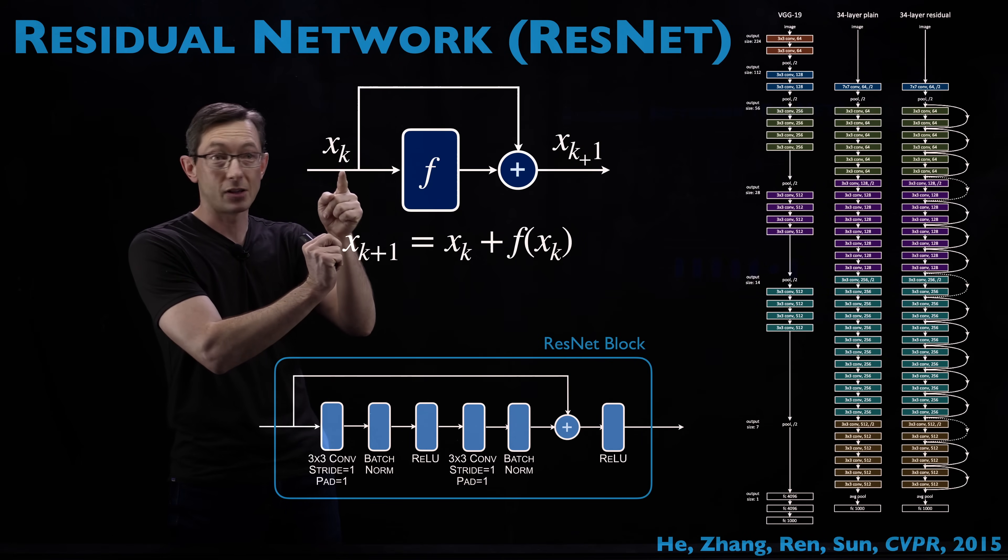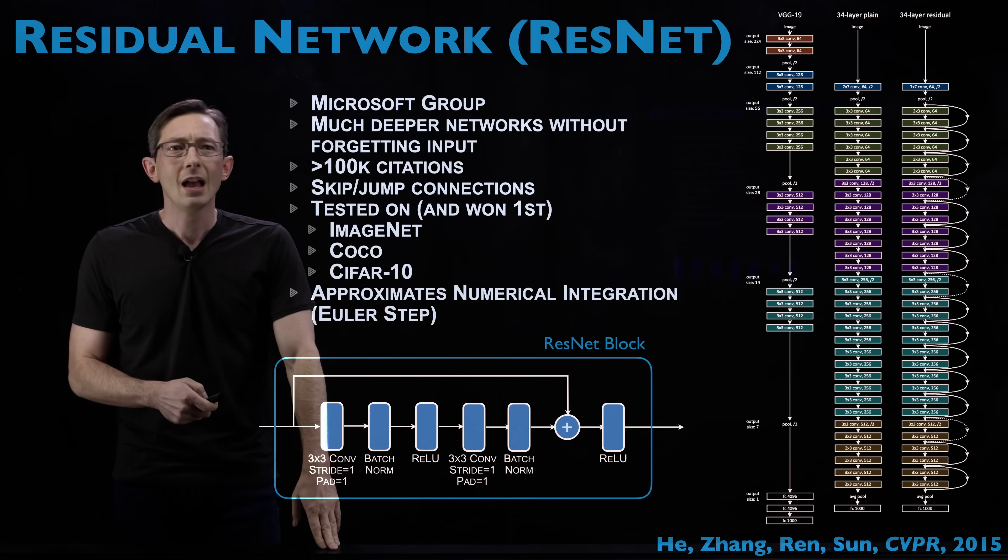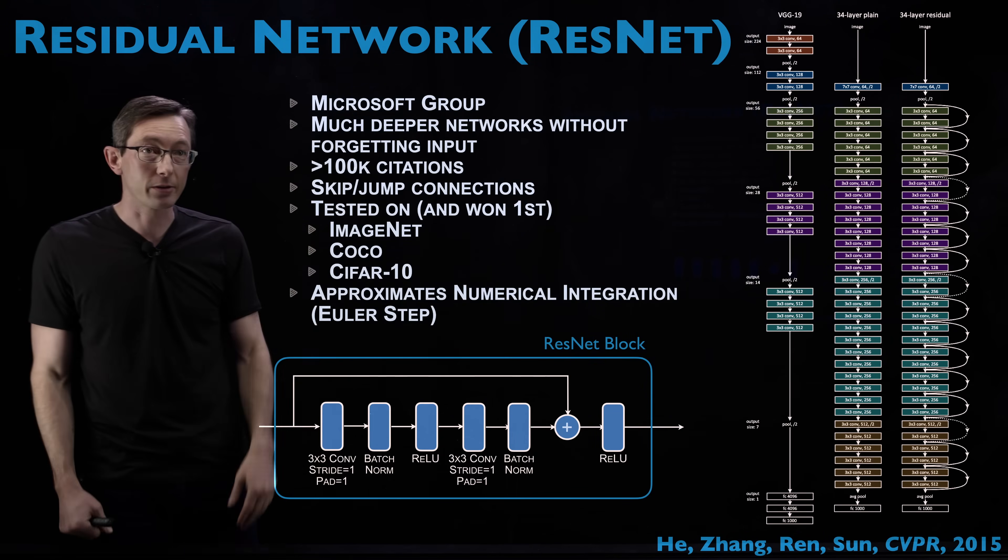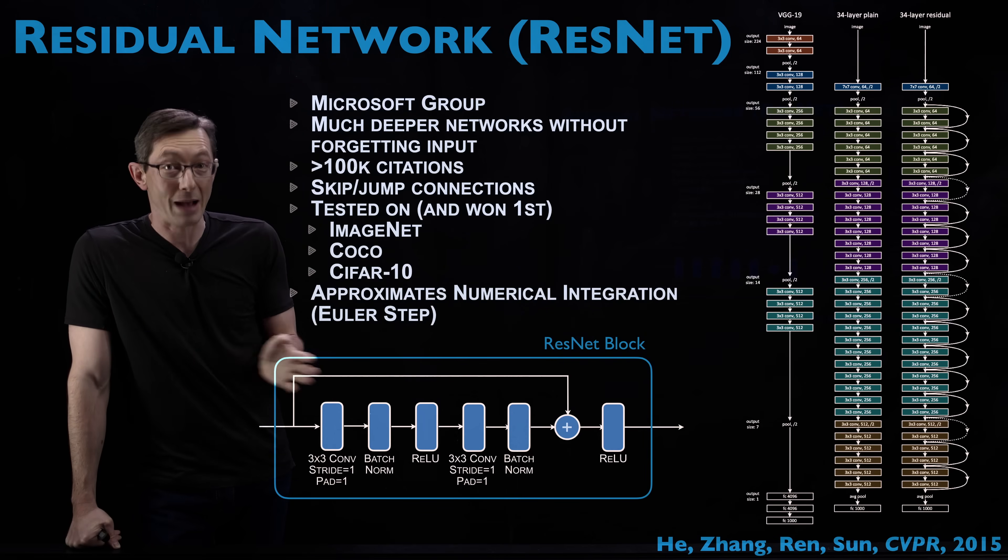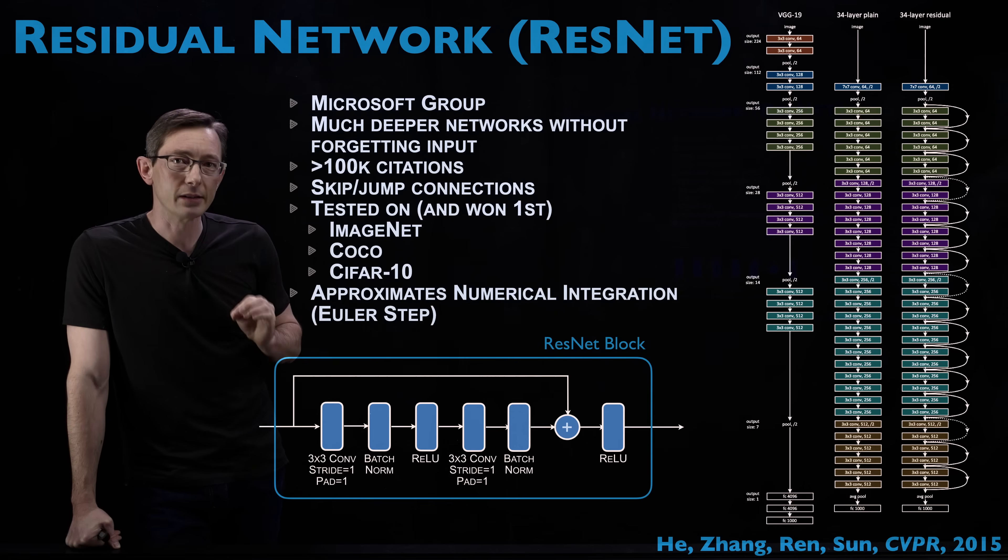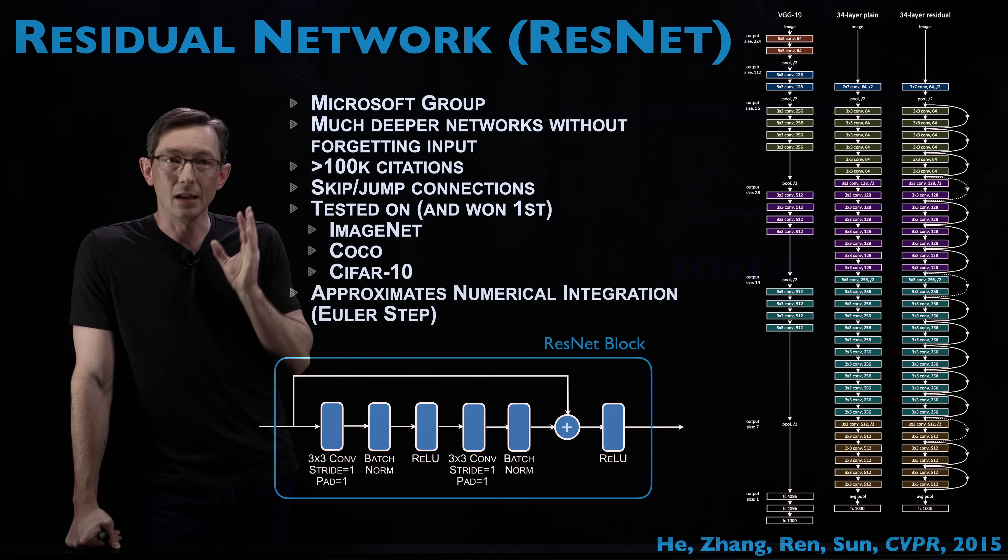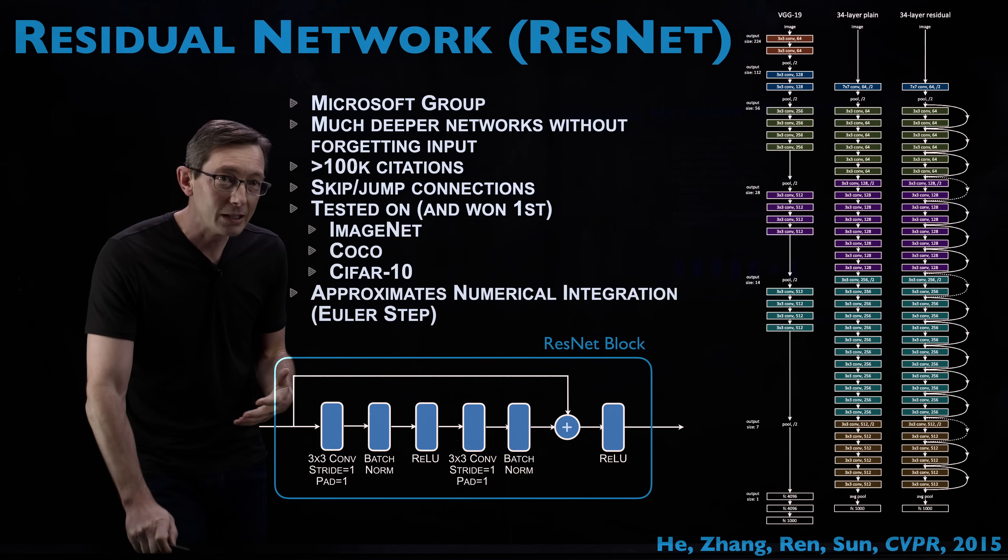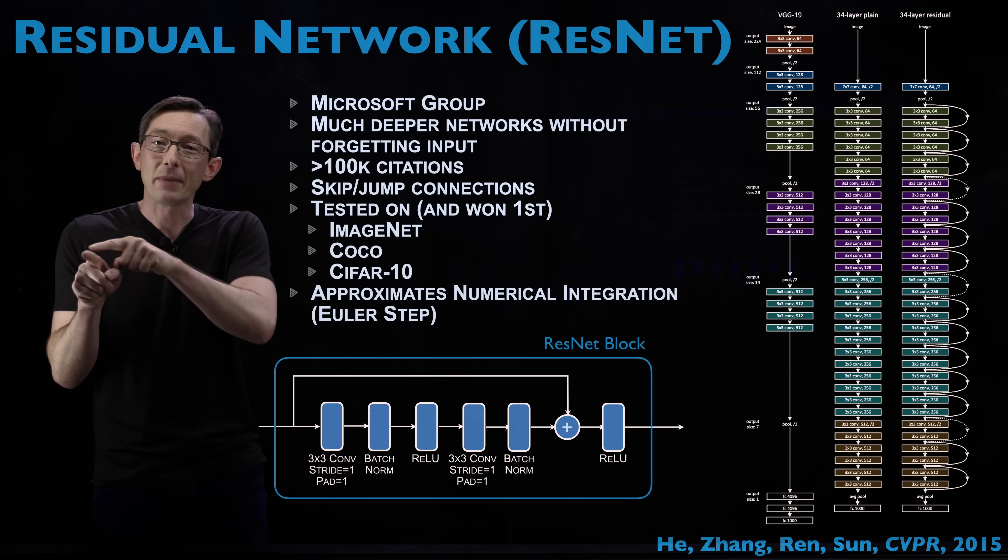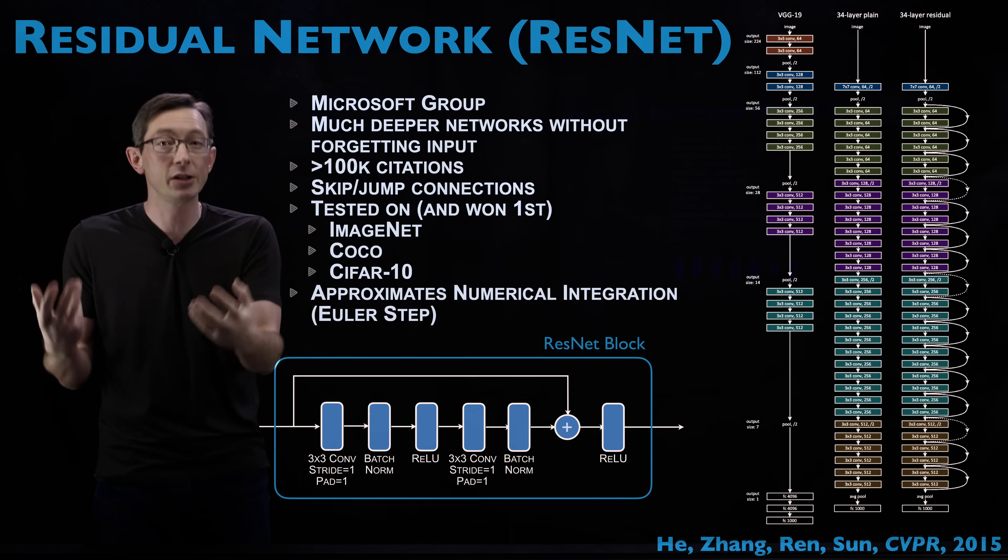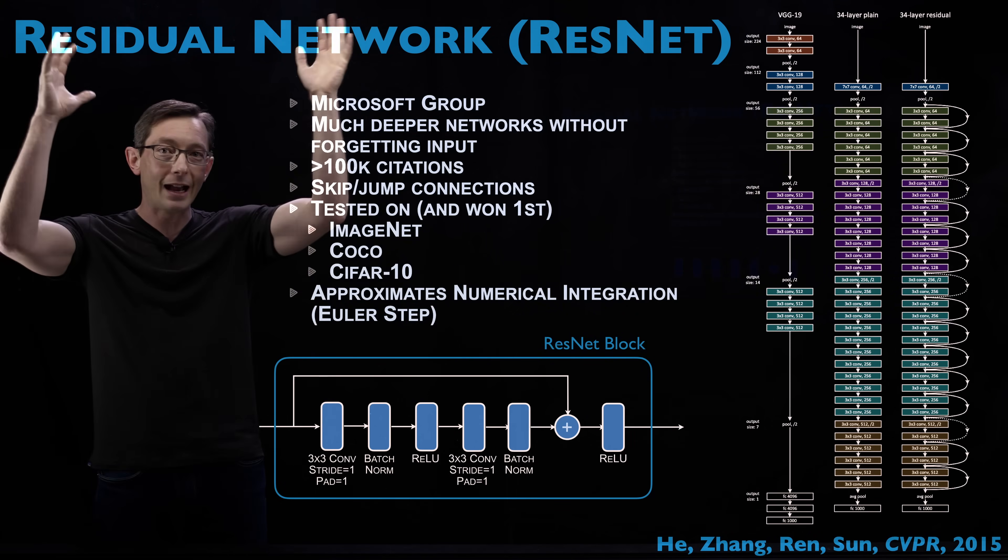This notation also helps when you look at this really big residual network architecture where each layer corresponds to an integer k. So there might be k1 through 34 in this big deep residual network. Some highlights I wanted to point out: this was introduced by Microsoft. It allows you to train much deeper networks without forgetting the input and also makes it easier to back propagate through this very deep network. This paper has been one of the most influential papers in the entire machine learning literature. It has over a hundred thousand citations at the time of this filming. It's a super important paper. And it's really based on this intuitive idea that I don't just want to build some map from X to Y, often X and Y are pretty related. I want to model the difference between X and Y, the residual between X and Y. And we do that by having this jump connection or skip connection. So that jump or skip connection is really the key idea here in this residual network.